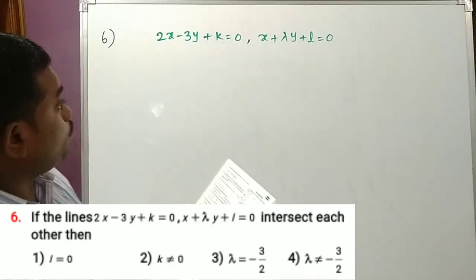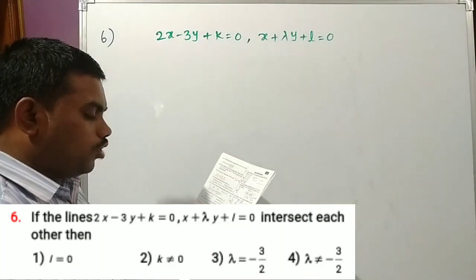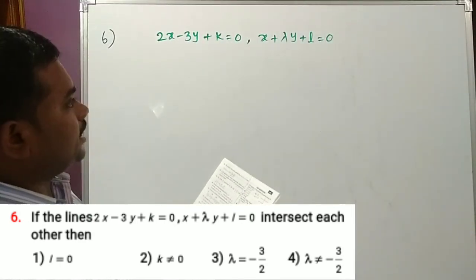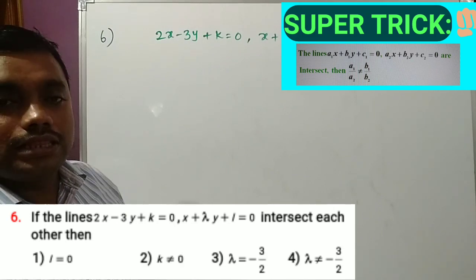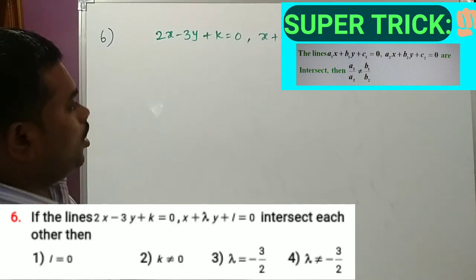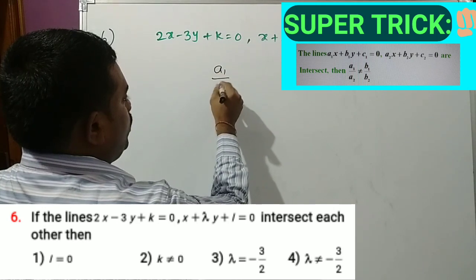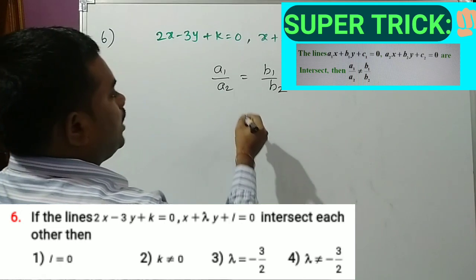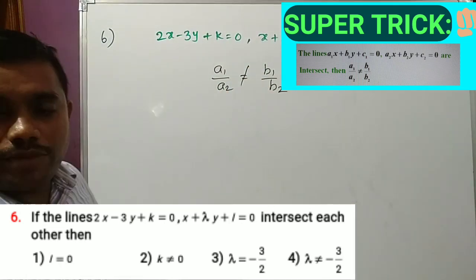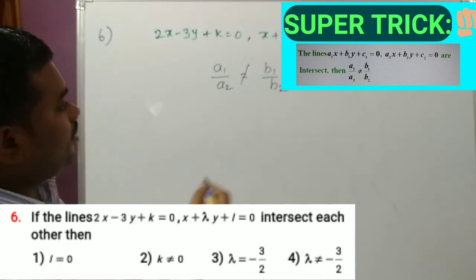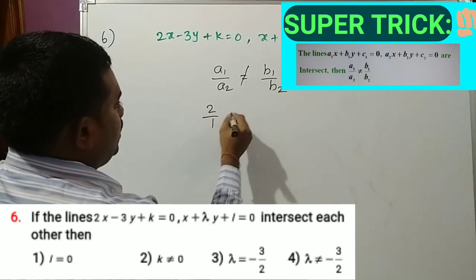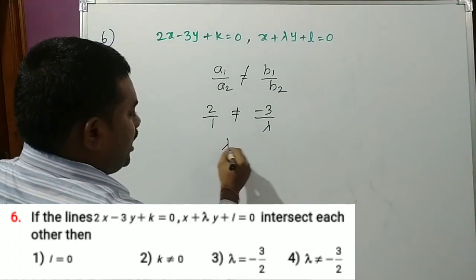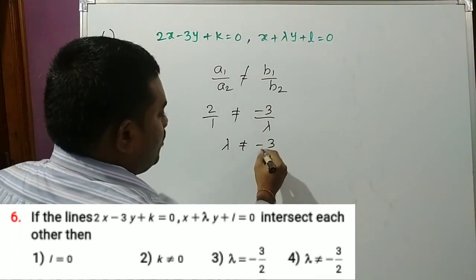Question 6: If the lines 2x minus 3y plus a equals 0 and x plus lambda·y plus l equals 0 intersect each other. Intersecting means the two lines are not parallel. The parallel condition is a1/a2 equals b1/b2. Since the lines are not parallel, 2/1 is not equal to minus 3/lambda, so lambda is not equal to minus 3/2. Option 4 is the correct answer.